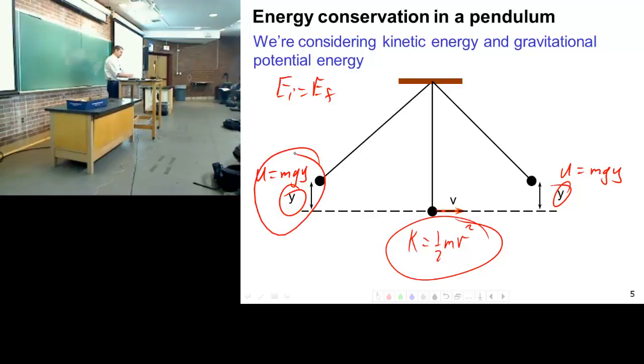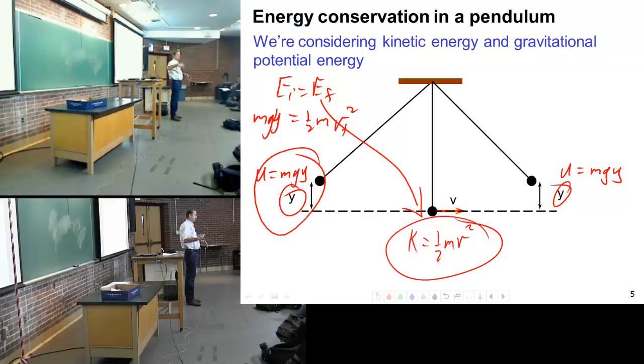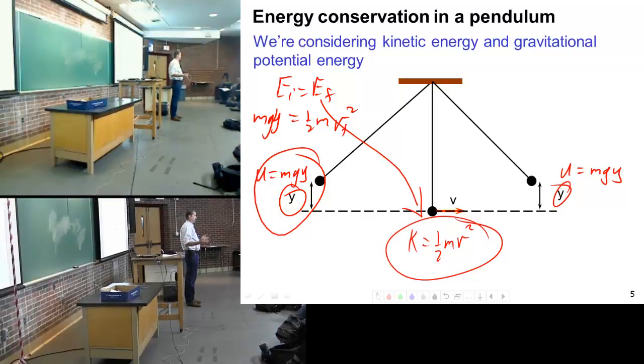This is my initial state. That's my final state. That would be mgy equals one half mv final squared. What do I see go away? Mass. Now, this is like the fourth or fifth time now, this semester. What is the thing making this pendulum go up and down? Gravity, right?